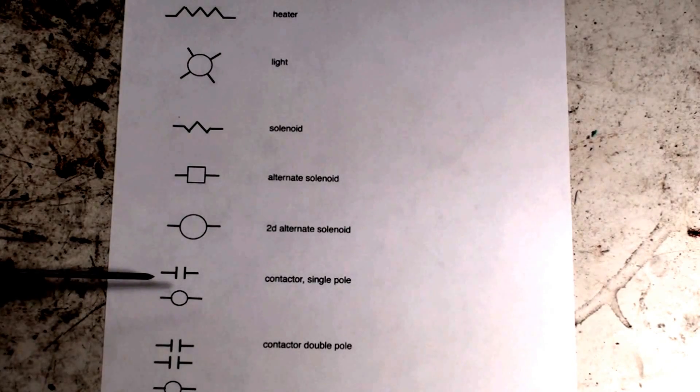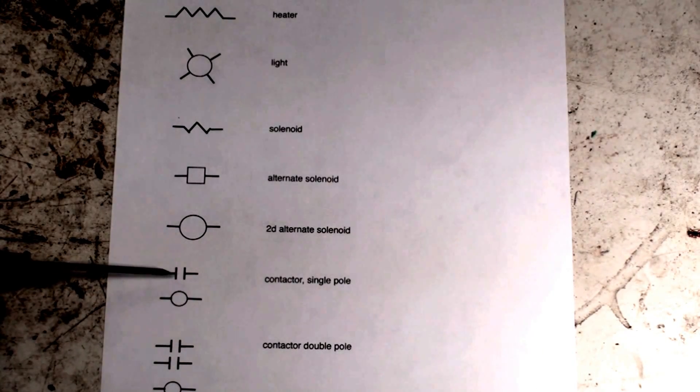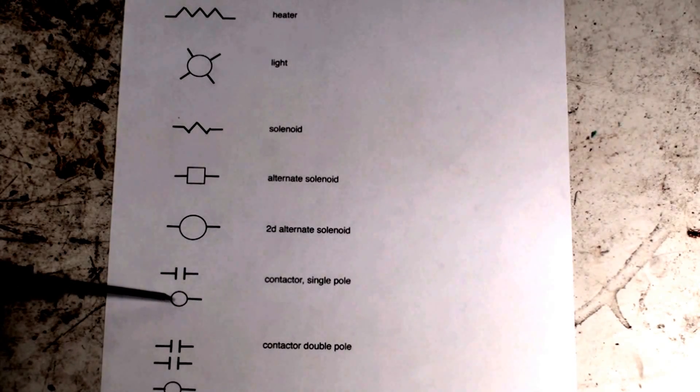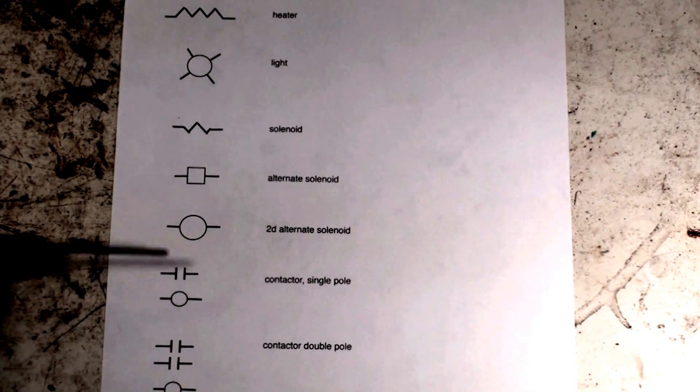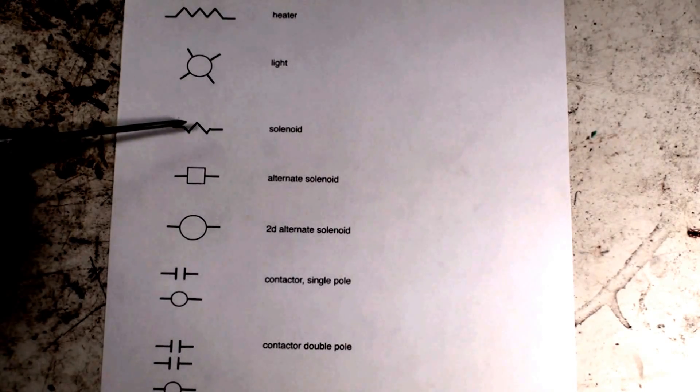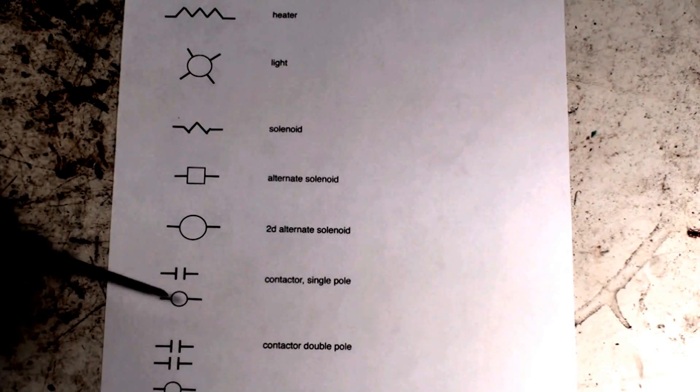Now I'm showing a single-pole contactor here which is showing a set of normally open contacts that would close when this solenoid energizes. Certainly you could have the solenoid symbol down here in place of this, but in this case I just put it in there like that.